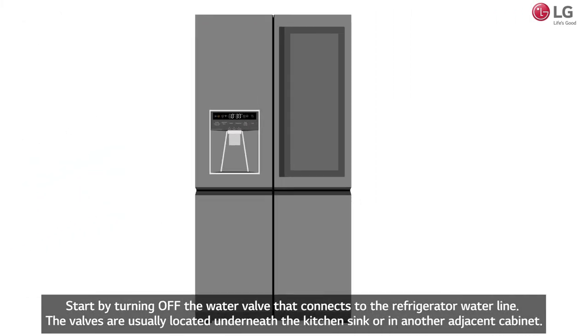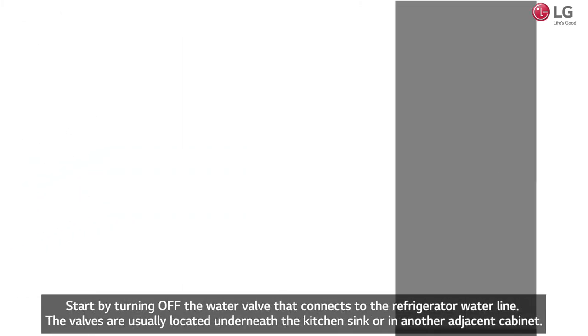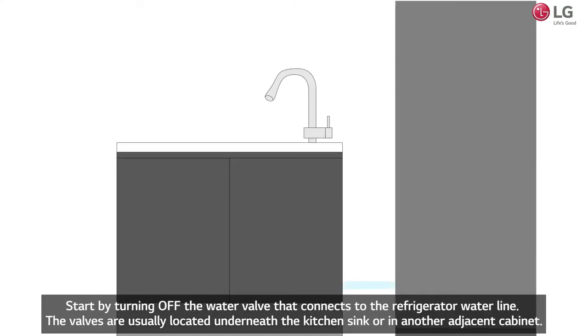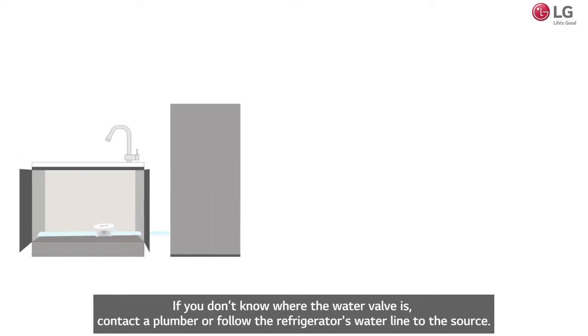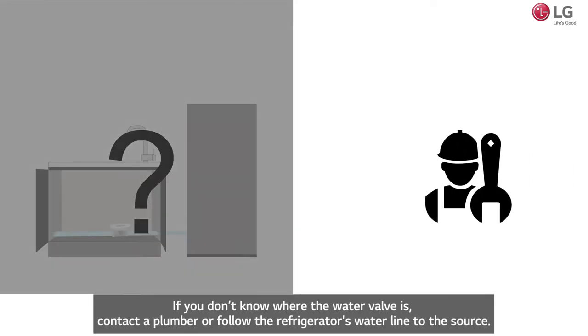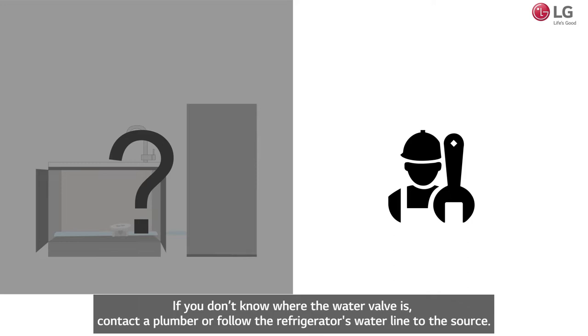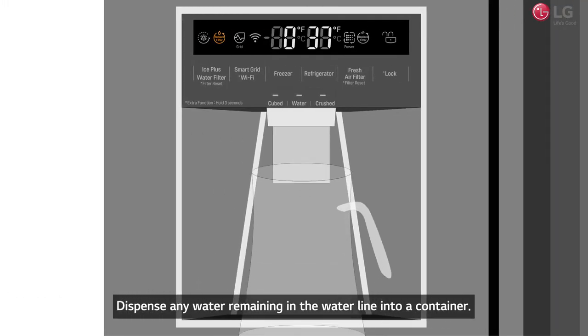Start by turning off the water valve that connects to the refrigerator water line. The valves are usually located underneath the kitchen sink or in another adjacent cabinet. If you don't know where the water valve is, contact a plumber or follow the refrigerator's water line to the source. Dispense any water remaining in the water line into a container.